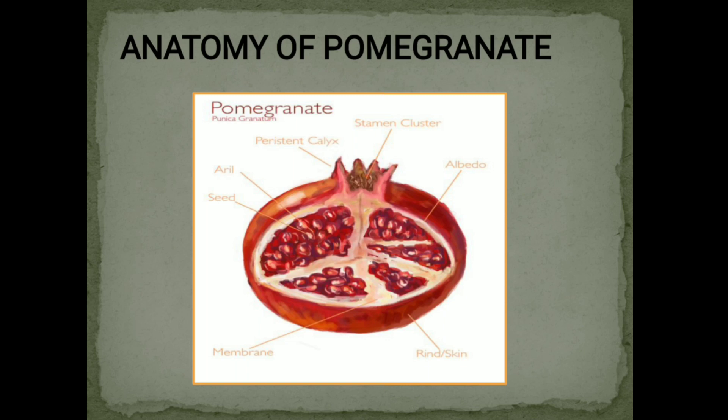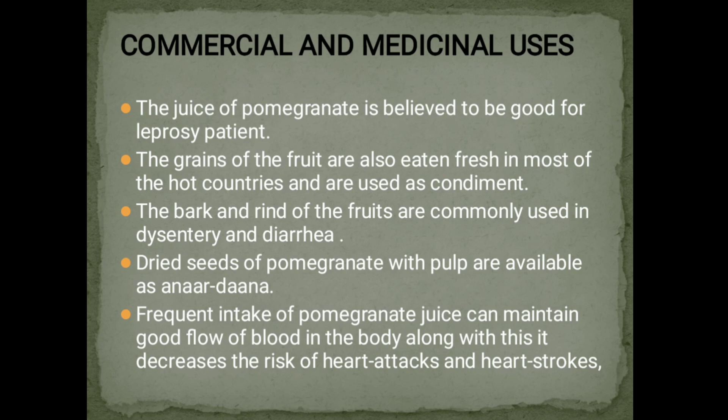Commercial and Medicinal Uses. The juice of pomegranate is believed to be good for leprosy. The grains of fruit are also eaten fresh in most hot countries and are used as a condiment. The bark and rind of fruits are commonly used in dysentery and diarrhea. Dried seeds of pomegranate with pulp are available as anardana. Frequent intake of pomegranate juice can maintain good blood flow in the body, and it decreases the risk of heart attacks and strokes.